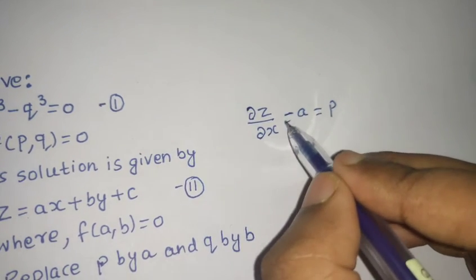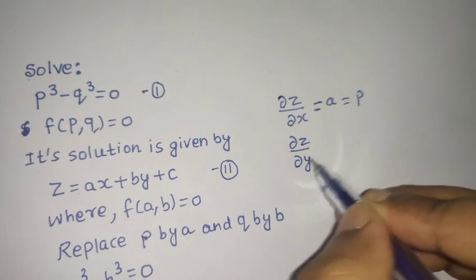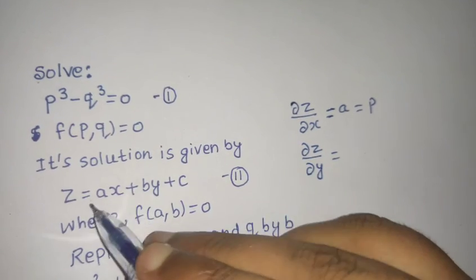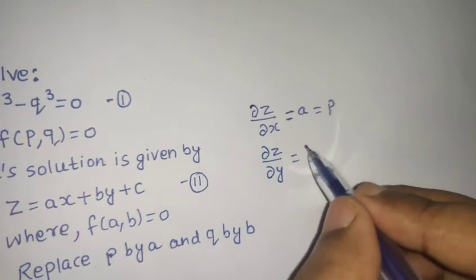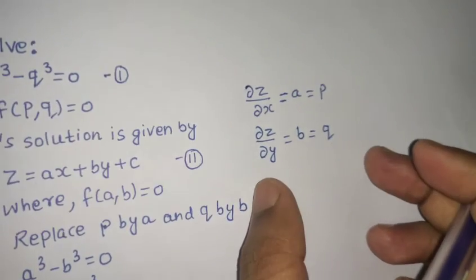First relation you got is why we replace P by A. Similarly, if you find ∂Z/∂Y, this constant, you are going to get B and ∂Z/∂Y is also equal to Q. This is the reason why we do so.